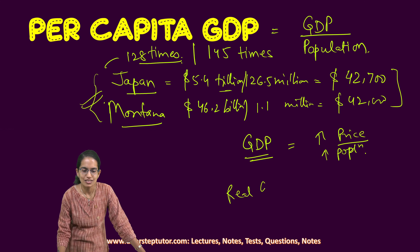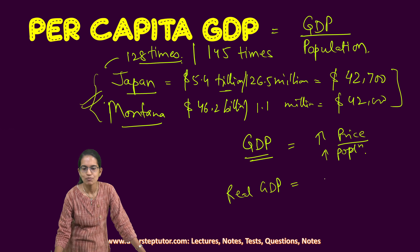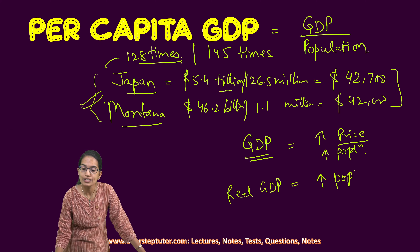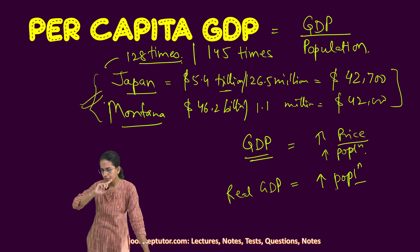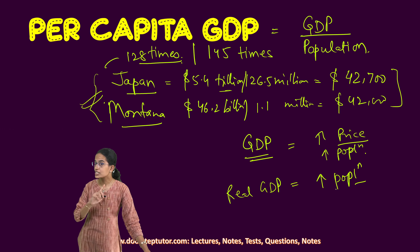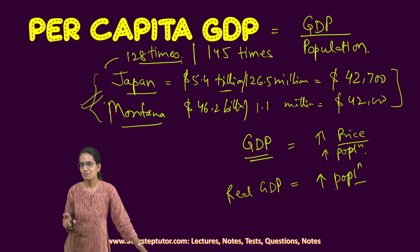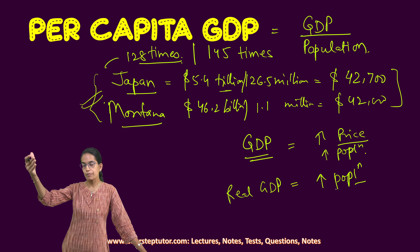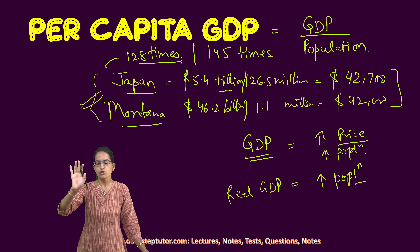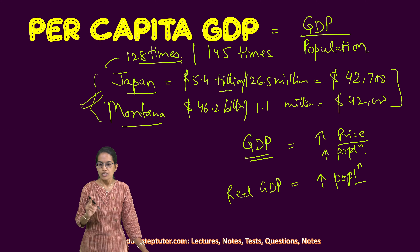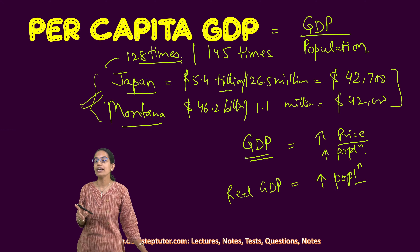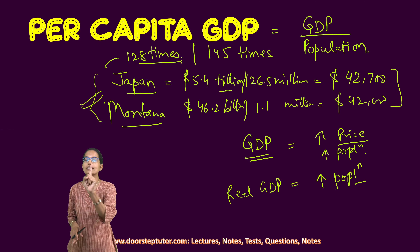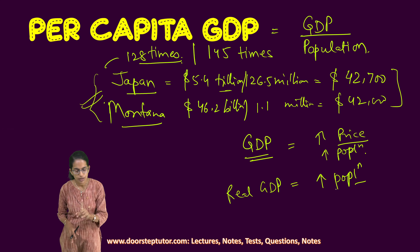What about real GDP? Real GDP would increase only with an increase in population, because it is inflation adjusted — it won't change with price changes. The price is already fixed based on the base year. So if the base year price was $5, real GDP would be affected by population increase but would not be affected by increase in prices.